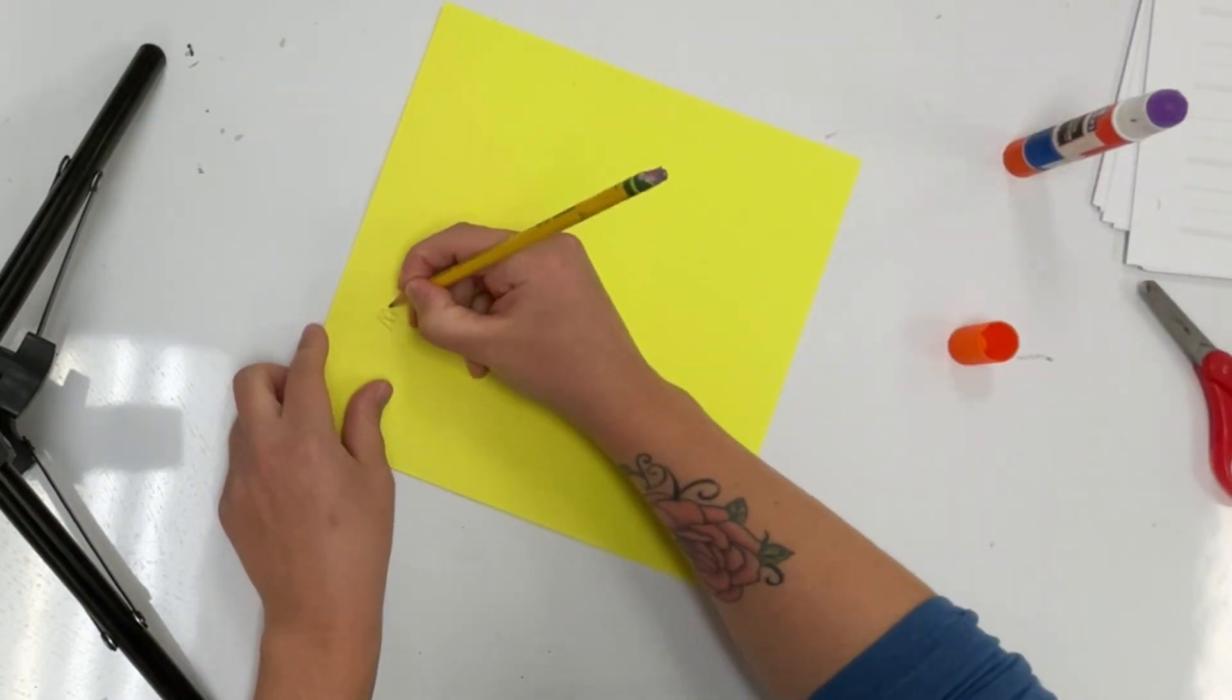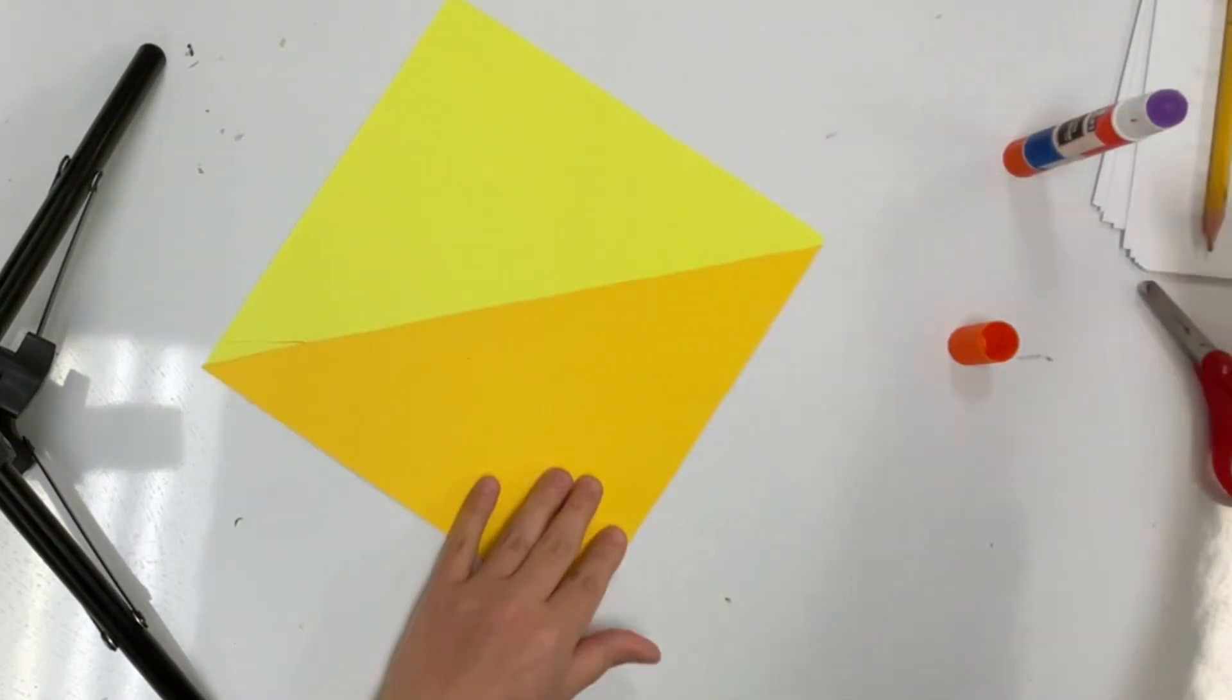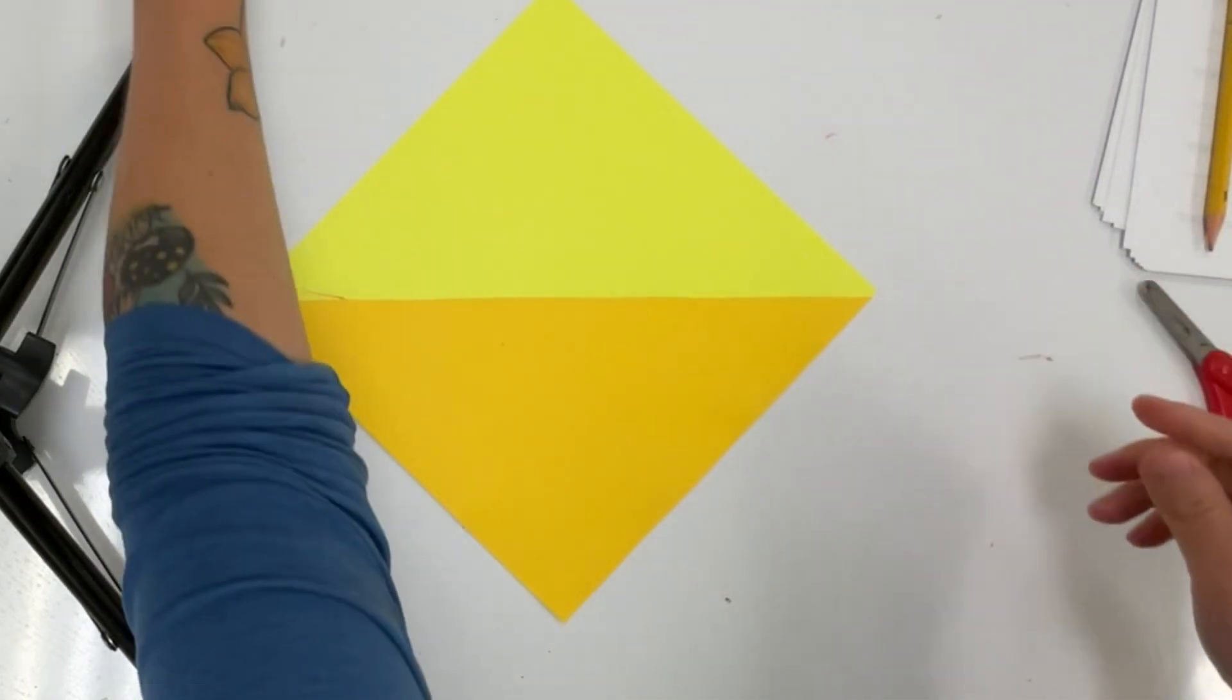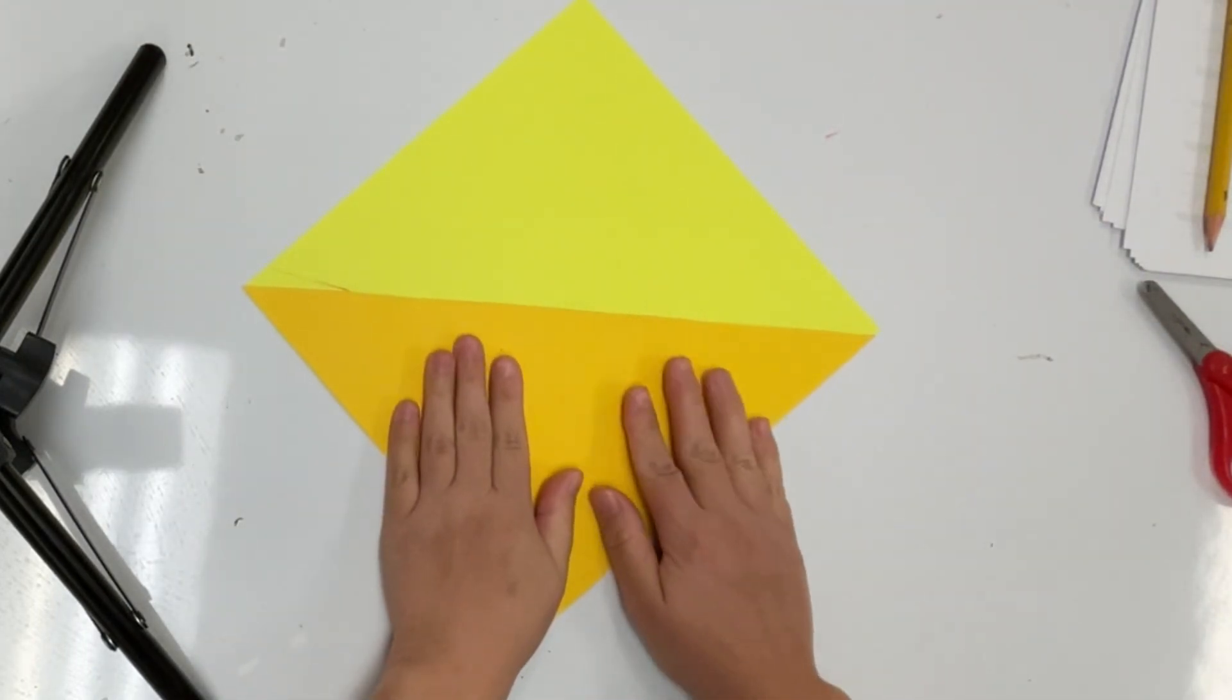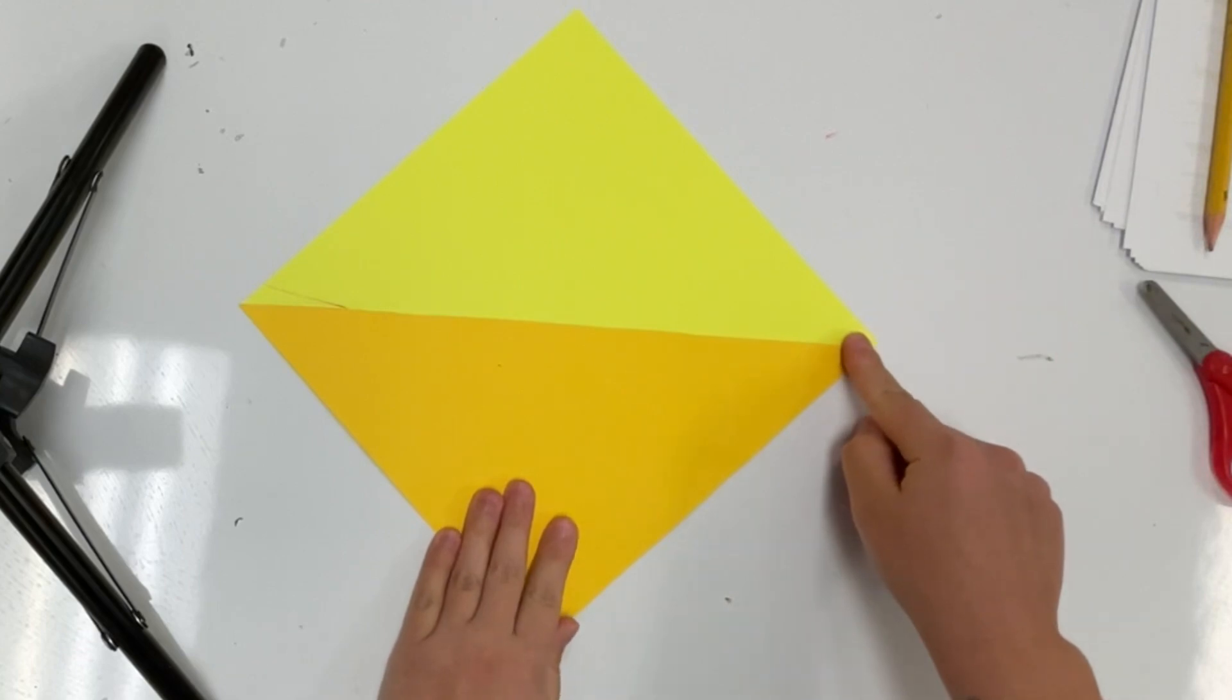Now I'll write my name on the back. Now I need to make sure that I position my diamond in front of me so that the center line is going horizontally from side to side.